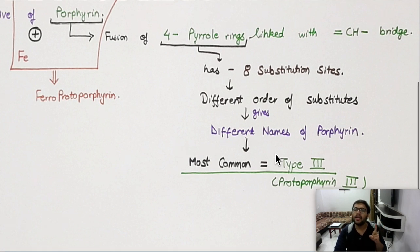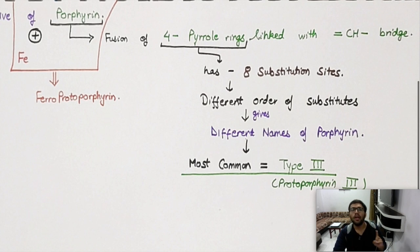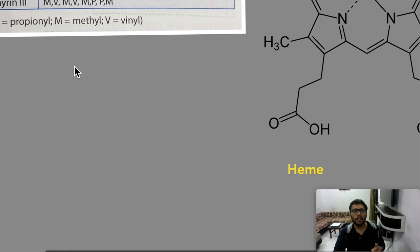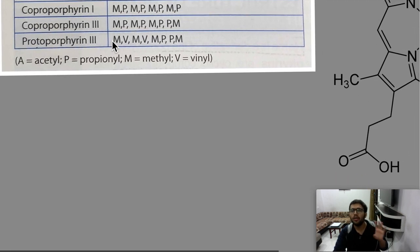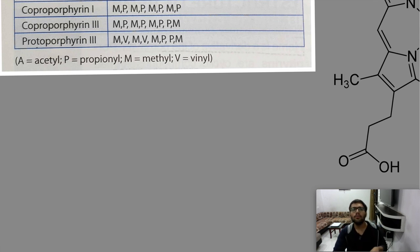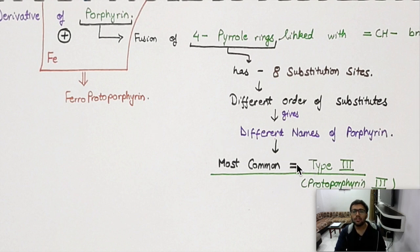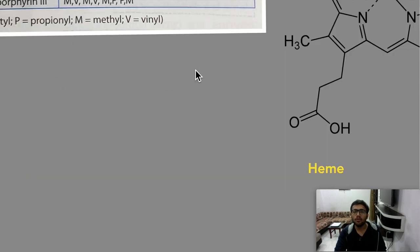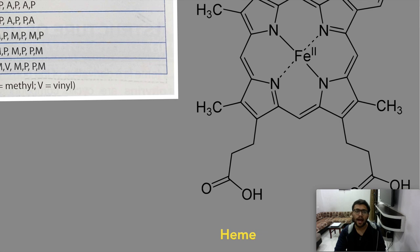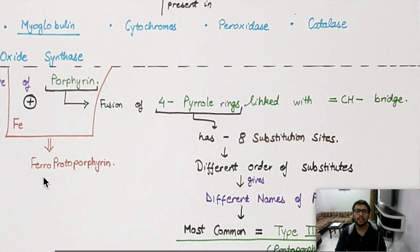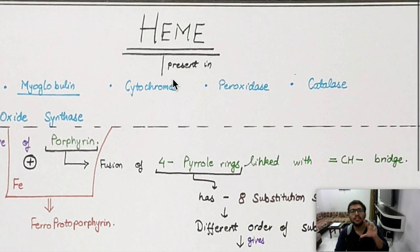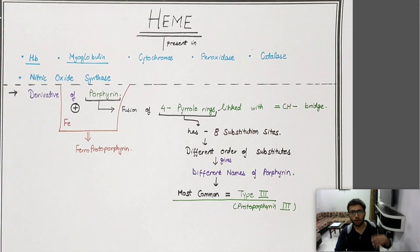You need to remember protoporphyrin type 3. You don't need to know every substitution detail like methyl-vinyl patterns. What you should know is how protoporphyrin type 3 is formed: pyrrole forms porphyrin, substitution gives protoporphyrin, and when you add iron (Fe) to it, it is called ferro-protoporphyrin — which is nothing but your heme.